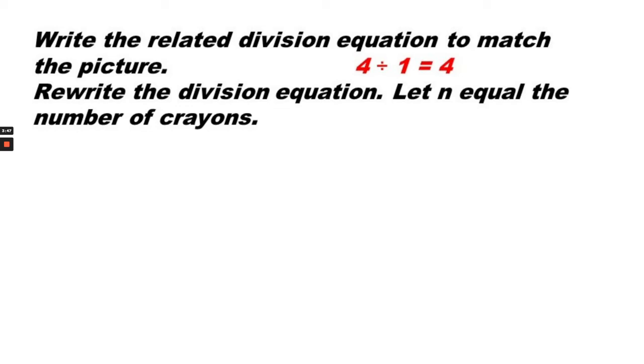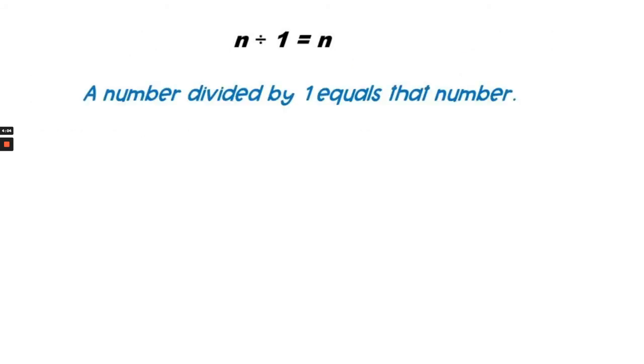Now let's write the division equation with an n in place of the number of crayons. So there are four crayons in all. So n divided by 1 equals 4, or n divided by 1 equals n. And that's our next rule. A number divided by 1 equals that number.